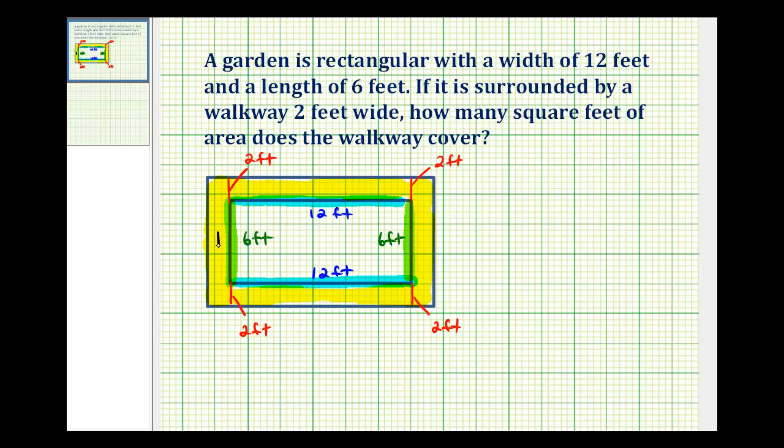We'll call this rectangle 1, 2, 3, and 4. The area for a rectangle is length times width. If we look at rectangle 1 and rectangle 2, notice they're going to have the same area. And looking at rectangle 1, to determine the entire length of this side here, it would be 6 feet plus 2 feet, plus 2 feet, plus 2 feet. So this entire length would be 10 feet.